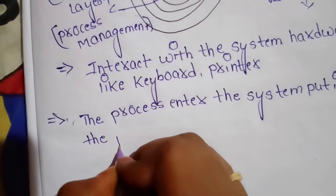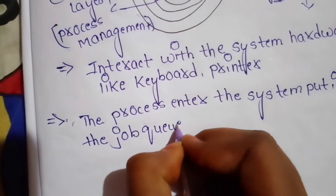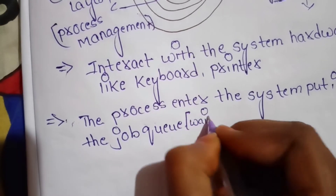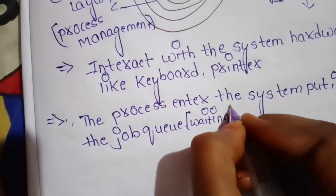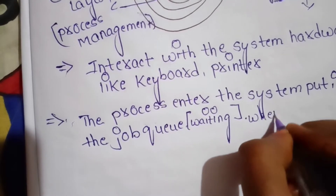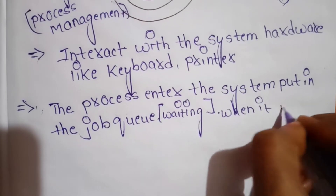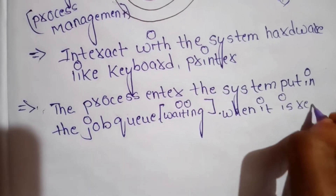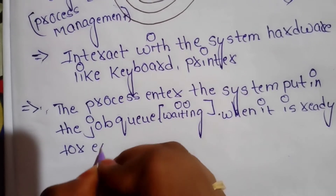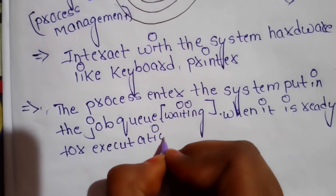In CPU scheduling, the process enters the system and is put in the job queue, also called the waiting queue. When it is ready for execution, it will then be placed in the ready queue.